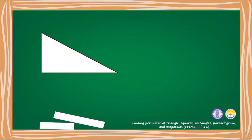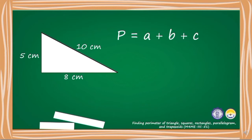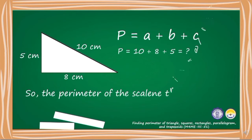This is a triangle — a scalene triangle — whose sides measure 8 centimeters, 10 centimeters, and 5 centimeters. The formula in finding the perimeter of a triangle is P equals A plus B plus C. P equals 10 plus 8 plus 5. So the perimeter of the scalene triangle is 23 centimeters.